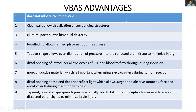The ViewSide brain access system has several advantages: it does not adhere to brain tissue; clear walls allow visualisation of surrounding structures; elliptical ports allow bimanual dexterity; bevelled tips allow refined placement during surgery; its tubular shape allows even distribution of pressure on retracted brain tissue to minimise trauma. There is a distal opening allowing CSF and blood to flow through the insertion site. It is made of non-conducting material, important when using electrocautery. The distal opening does not reflect light — unlike many retractors — preventing obscured views of tumour surface and vessels, thereby avoiding vascular and brain tissue injury.